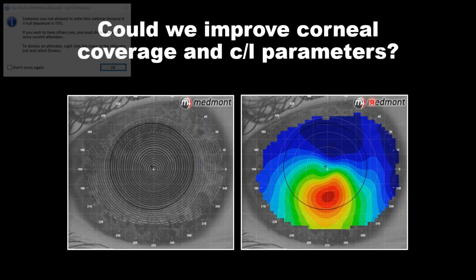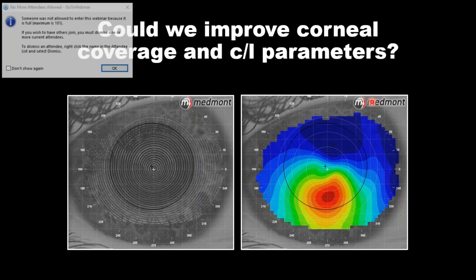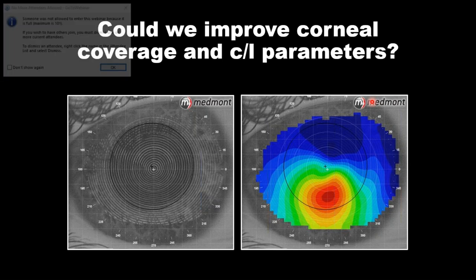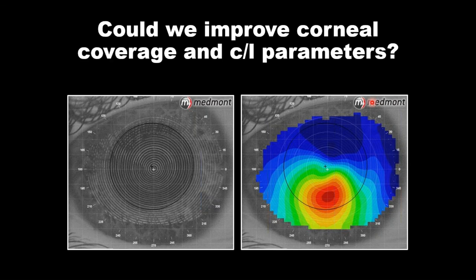One of the issues when we fit a big diameter lens today, especially a scleral, is we want as much corneal information as we possibly can get. But as you can see in this topography, we're missing a fair amount of the peripheral cornea.